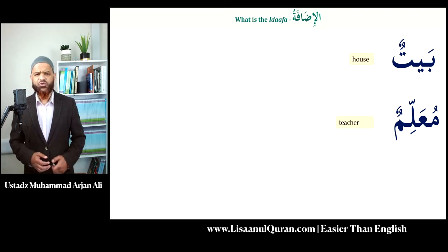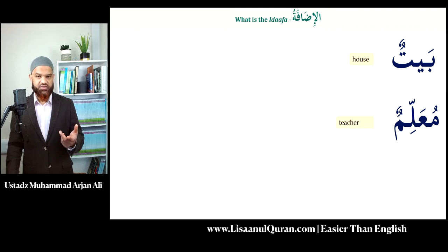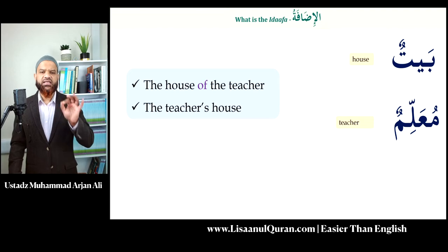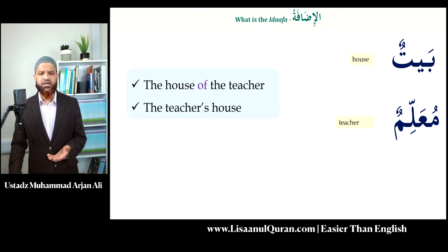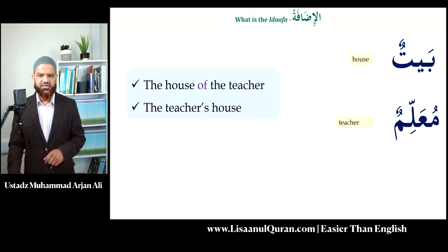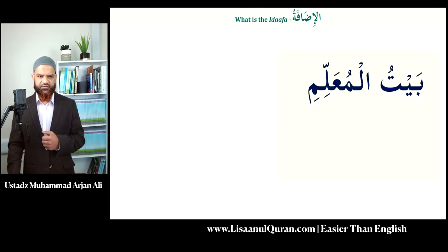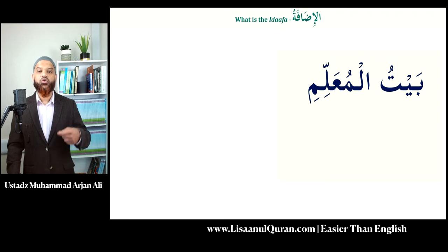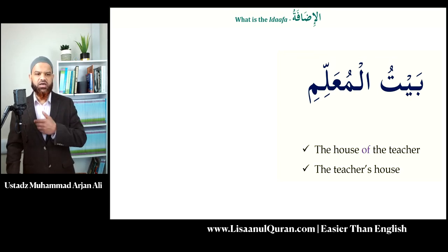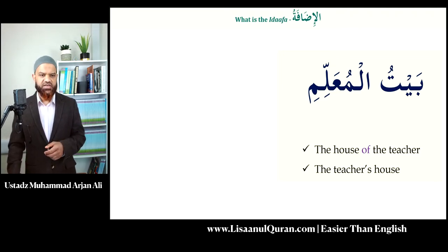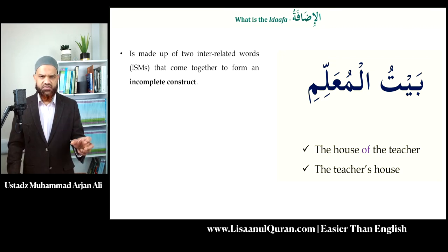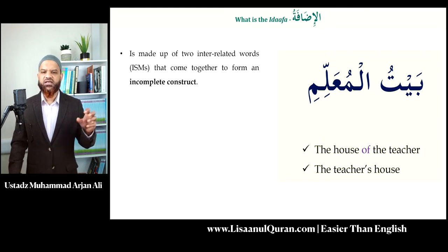Let's look at two words: baytun, which means 'house,' and muallimun, which means 'a teacher.' In Arabic, 'the house of the teacher' is exactly the same as saying 'the teacher's house.' So I have baytun and muallimun — how do I put them together? This is called the idafa. In Arabic, to say 'the teacher's house' I will say: baytul muallimi. This is the idafa — it is made out of two isms that are interrelated and have come together to form this murakkab, called the incomplete construct.